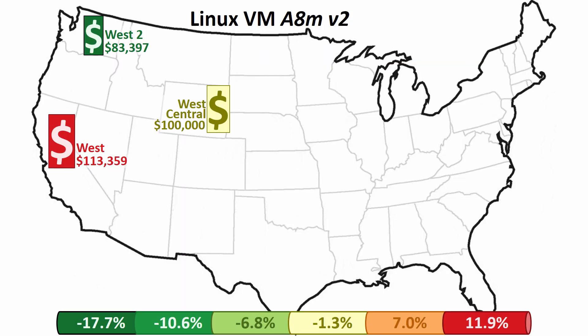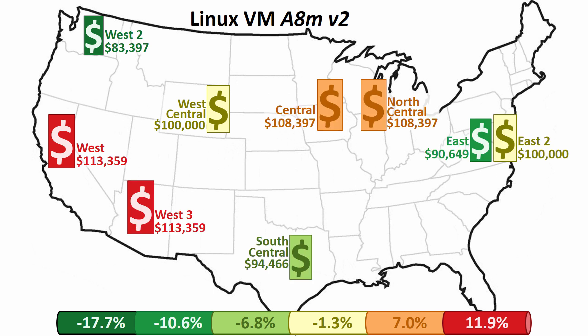Here's an example of the two extremes. If you would have chosen West 2 instead of West Central, you would have saved nearly $17,000. But if you chose West instead of West Central, it would have cost you $13,000 more. Here's what the other spends look like. This is just a really good example to show how much price variability there can be from region to region.